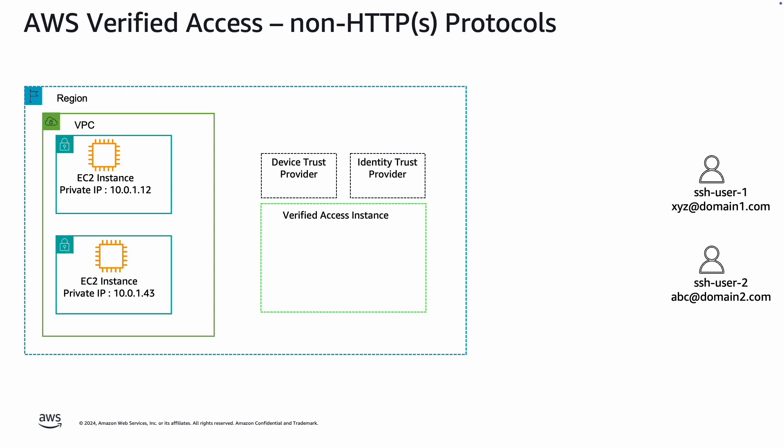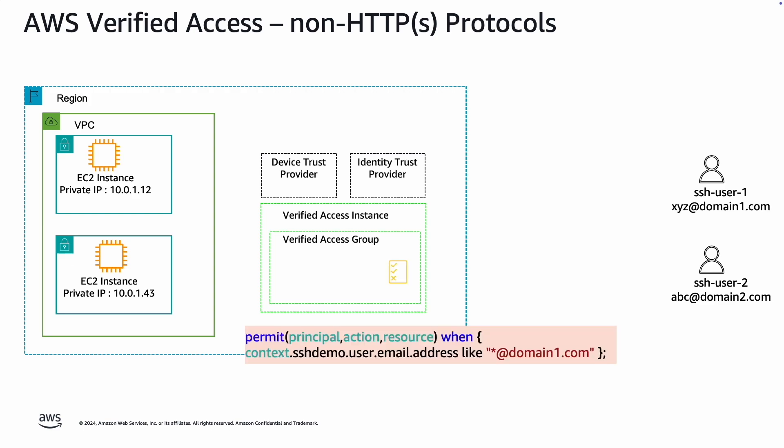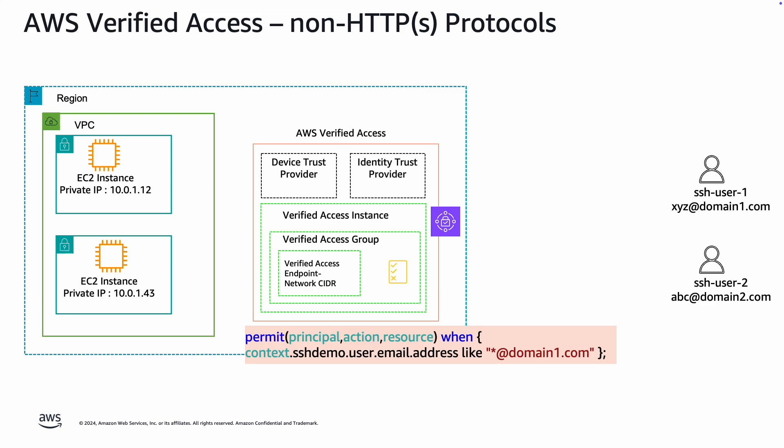We'll start by creating our first component, the Verified Access instance, along with the trust providers. Verified Access supports two types of trust providers: identity-based or device-based. Next, we'll create our Verified Access group where we can define the policy for what type of user can SSH into the EC2 instances. I have defined a policy here saying that if my user email address belongs to domain1.com, only those users should be able to SSH into these EC2 instances.